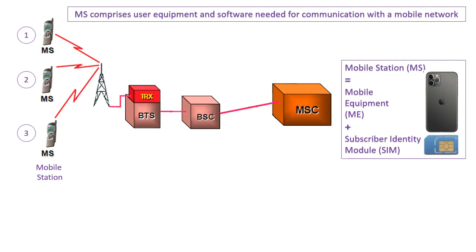MS is nothing but the mobile station, so there are three mobile stations in this diagram. MS comprises user equipment and software needed for communication with the mobile network. MS is the combination of mobile equipment — the handset — plus the SIM card which is inserted inside the mobile phone.